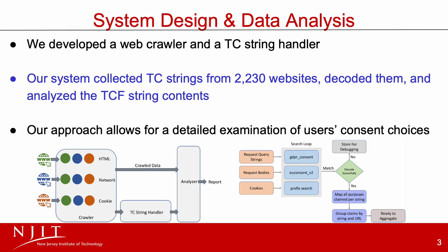To automate the extraction of TC strings from the crawled data, our system follows the pipeline shown in the figure on the right. First, it parses the data collected by the crawler and extracts the TC strings from both the cookies and HTTP requests. Then, the parser identifies strings with the prefix C, which serves as the initial character of the TC string with TCF version 2.0 or higher. We then decode the TC strings.